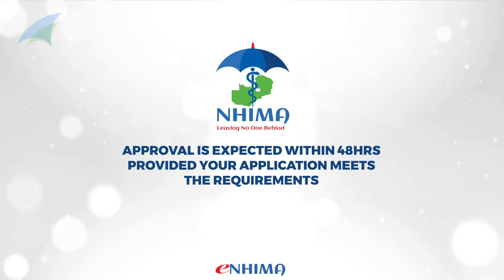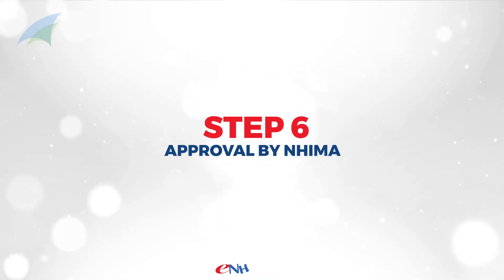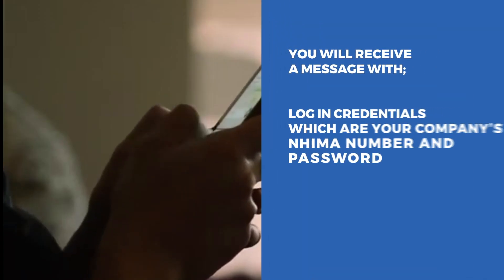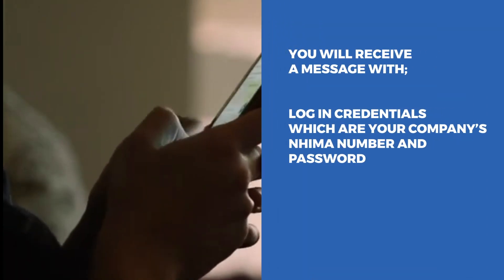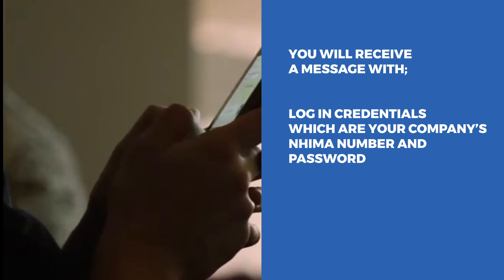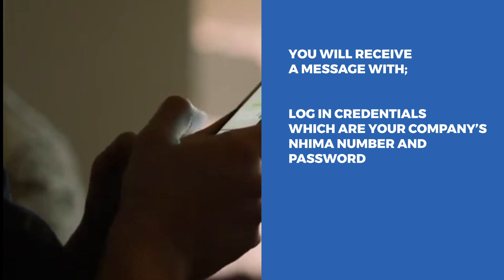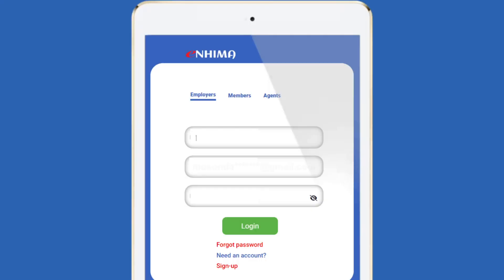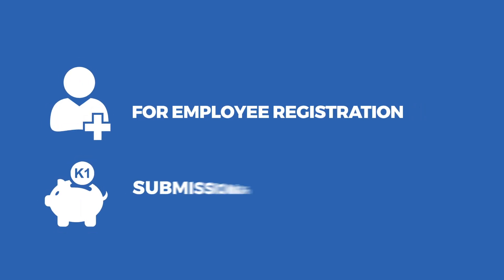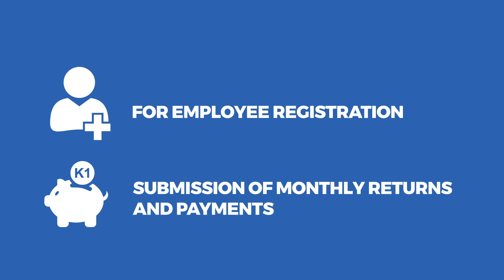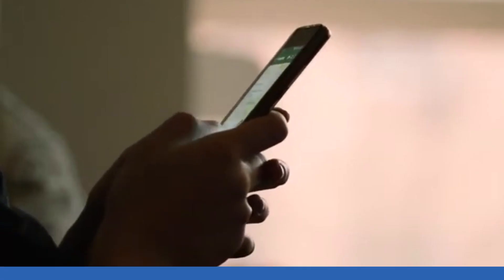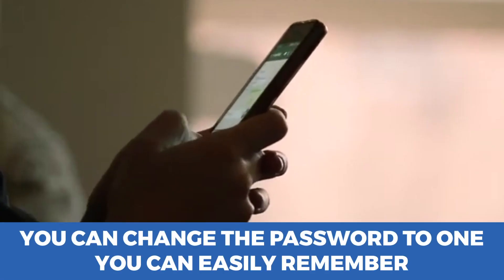Step 5: Your application will then be subjected to NEMA's assessment and information verification. Approval is expected within 48 hours, provided your application meets the requirements. Step 6: Once approved, you will then receive a text and email with your account login credentials, which are your company's NEMA number and password. You will use the password and NEMA number to log into your account for employee registration, submission of monthly returns, and payments.